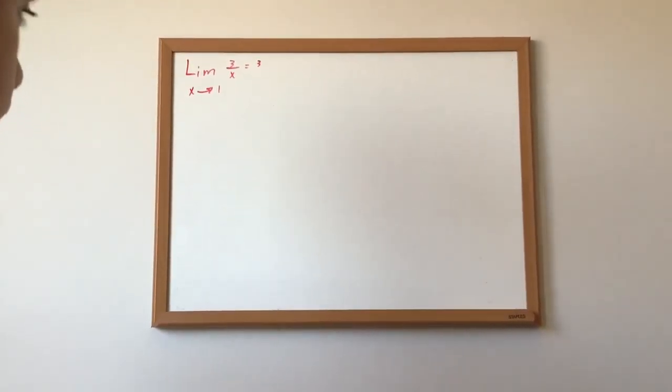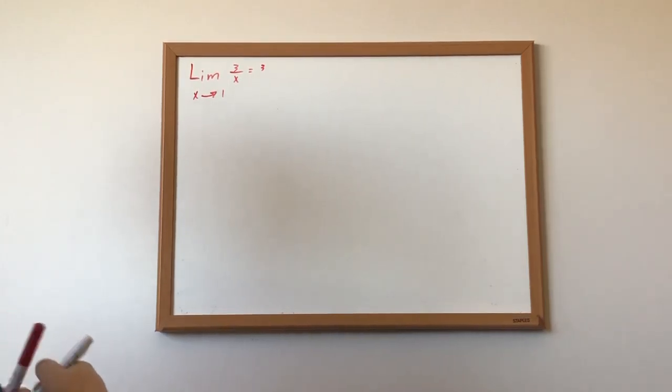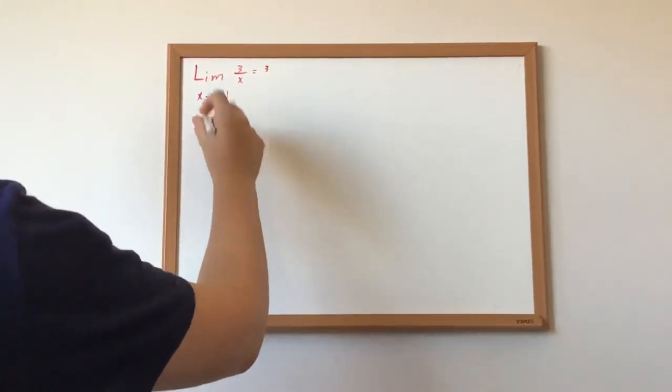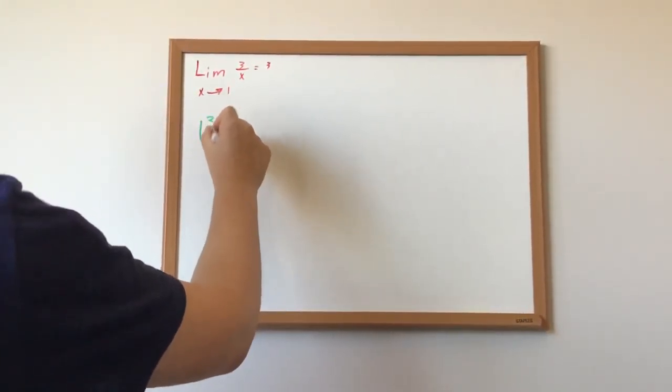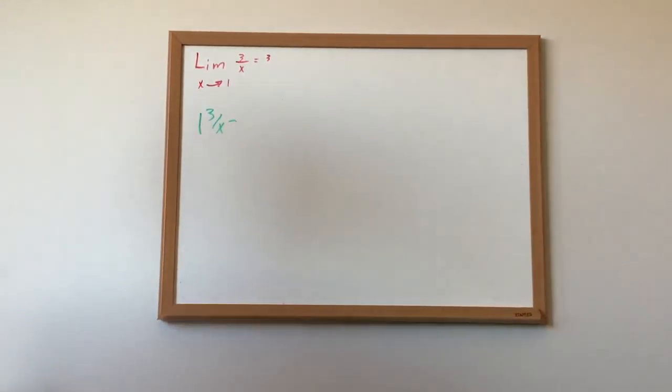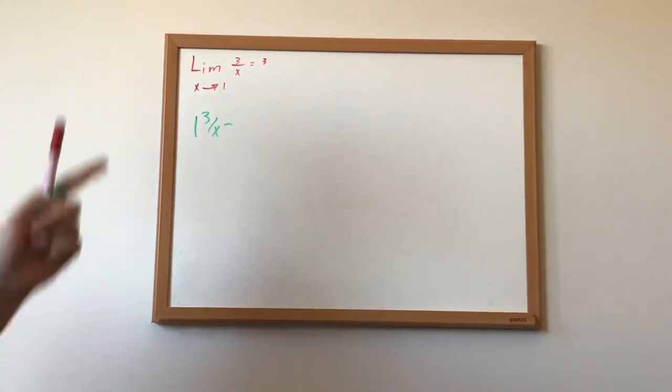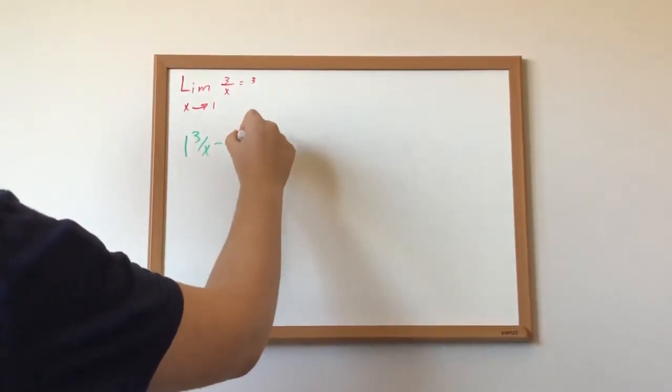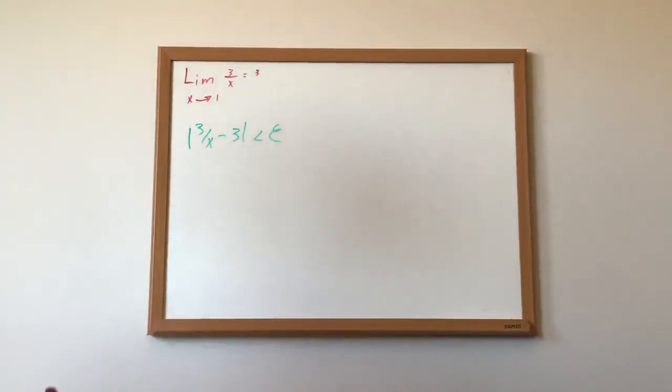But why is this? So, for proving it, we set the absolute value of f of x, which is 3 over x, minus the value we think is the true limit, which is 3, should be less than a number, which is epsilon.